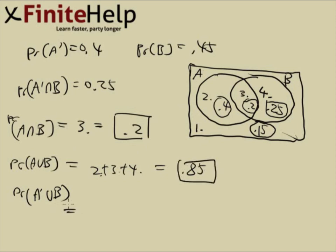Here's probably the hardest part. A prime union B, well, what the heck is that? Okay, so we want, this is union, so this means I want everything that's in A prime or that's in B. Well, let's just know what A prime is. A prime is one and four. B is three and four.